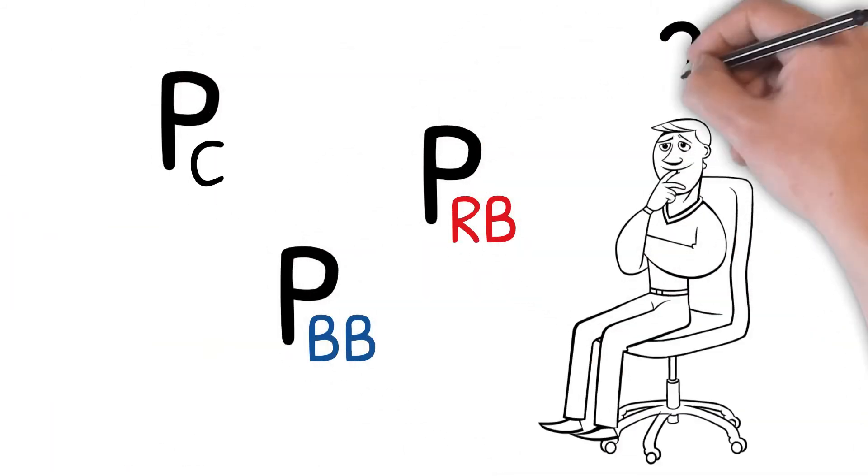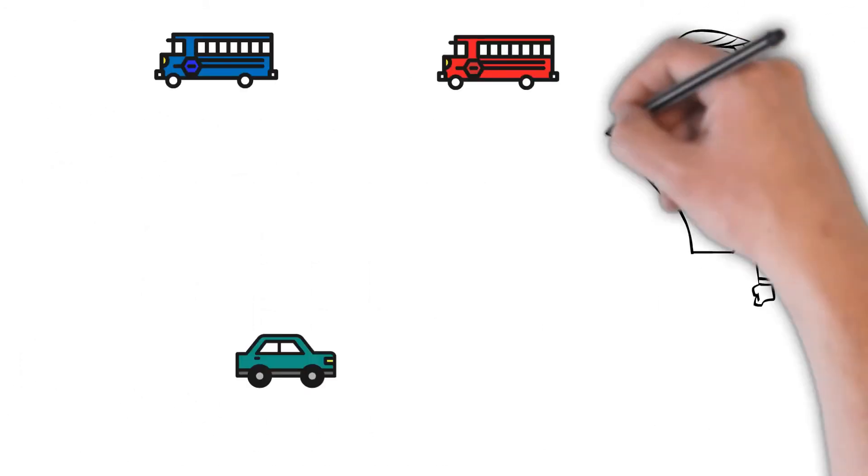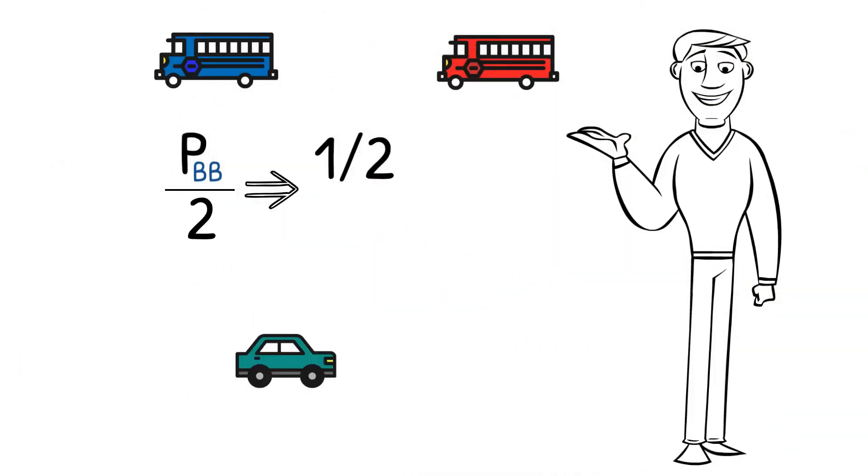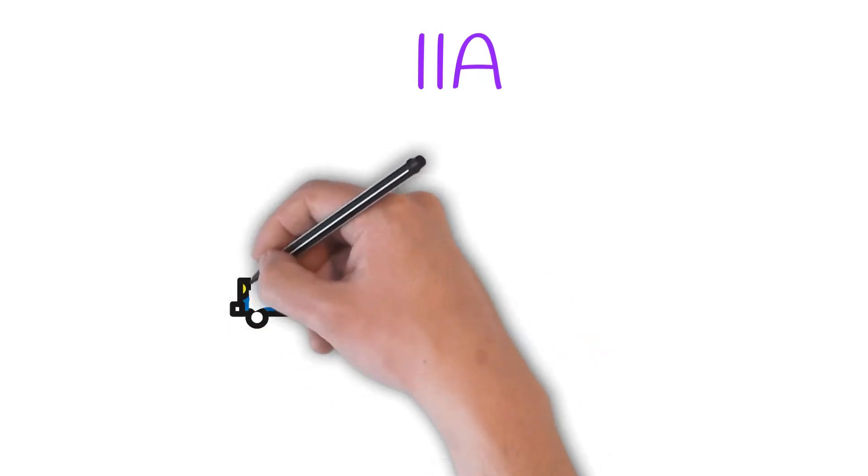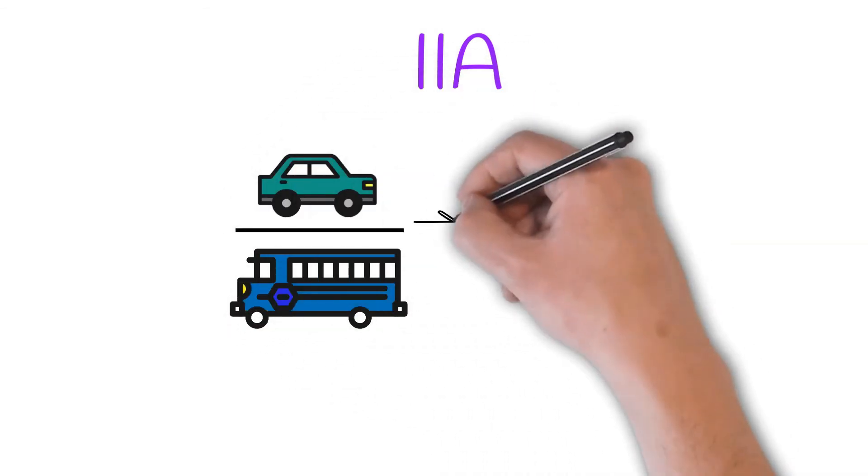The logical thing to do for Joe would be to split the probability corresponding to the blue bus while the probability of the car remains unchanged. But this would violate the property of the IIA, since now the probability of the blue bus has changed and the comparison with the probability of the car is no longer one.